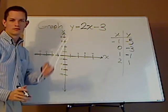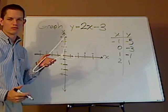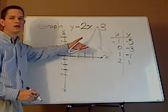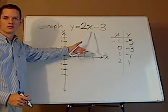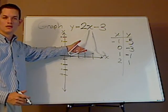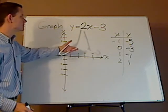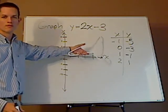What you can also do - what form is this in? It's a line. What form is it in? It's in slope-intercept form.